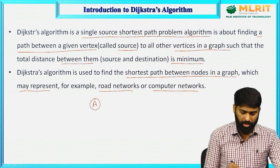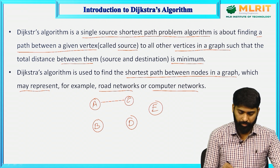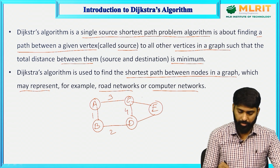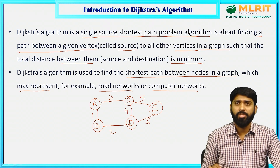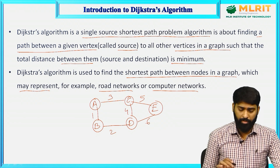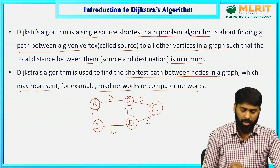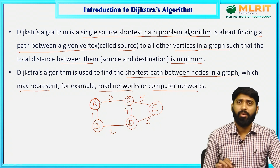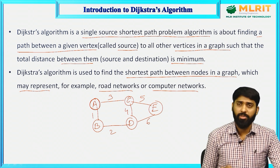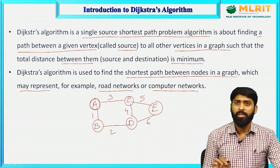Let us assume these are the vertices in a graph with some weights. The purpose of Dijkstra's algorithm is to find the shortest path from one node to all the nodes in the graph. For example, the source vertex is A. From this vertex A, we have to find the shortest path to all the remaining vertices — from A to C, from A to B, from A to D, and from A to E.